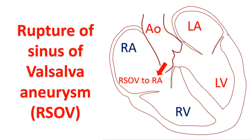Sinus of Valsalva aneurysm is usually due to a defect in the aortic media. A ventricular septal defect or aortic regurgitation may be found as associated abnormalities. Nearly 70% of aneurysms originate from the right coronary sinus. The aneurysm may compress an adjacent chamber, coronary artery, or conduction system, which can cause myocardial ischemia or conduction disturbances.